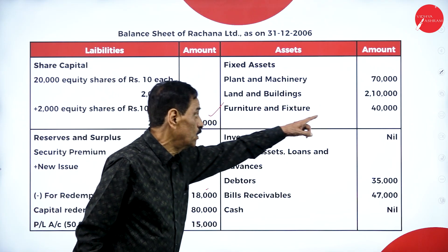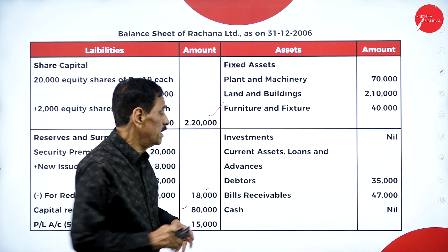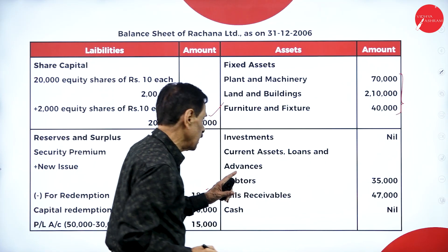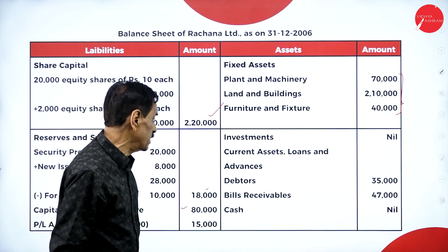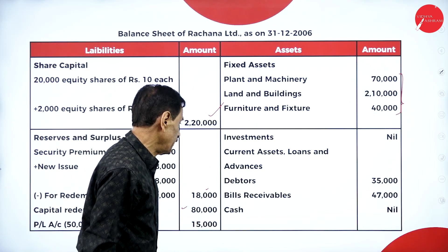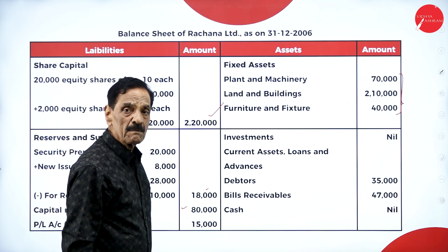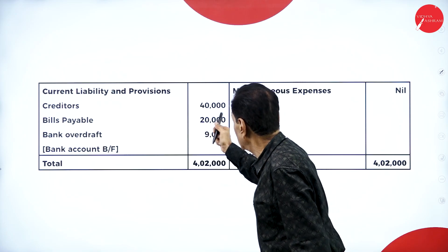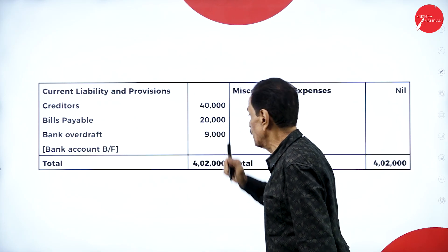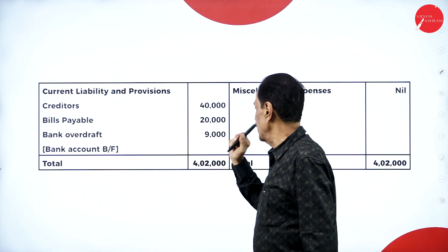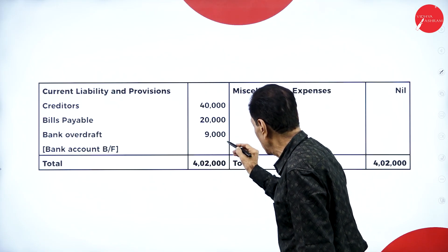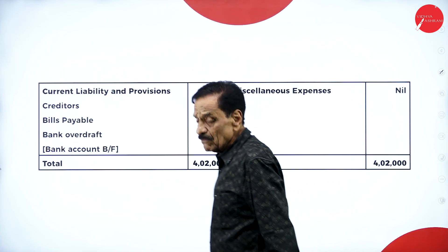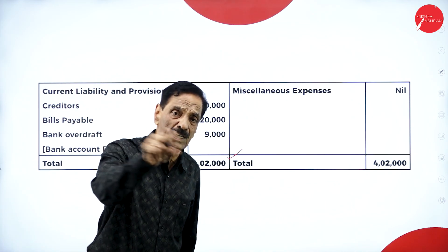On the asset side: fixed assets — tangible: machinery seventy thousand, building two lakh ten thousand, furniture. These are all fixed assets. There is no investment remaining. Current assets, loans and advances: debtors thirty-five thousand. There is no cash at bank because we have created the bank overdraft. On the credit side: creditors forty thousand, bills payable twenty thousand, bank overdraft nine thousand.